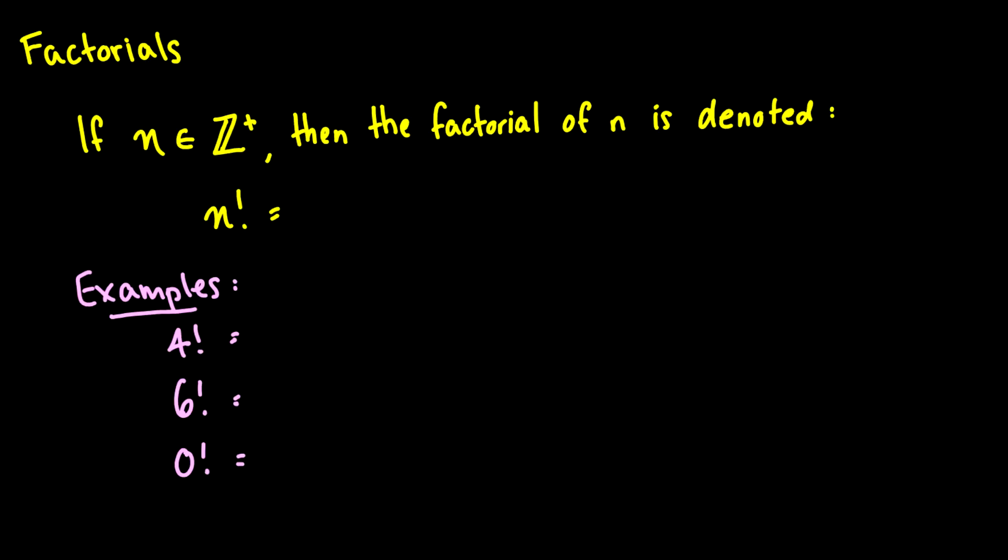Today we're going to talk about factorials and then we're going to start with permutations, a little bit more of an advanced counting thing. Of course advanced to the general public, but very basic in a discrete math course. So first we need to define a factorial.